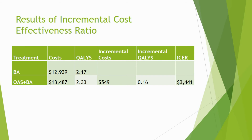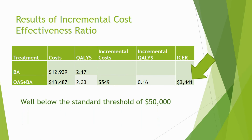The average cost for the BA population was slightly lower than the average cost for the OAS plus BA population. However, the QALYs for the OAS plus BA population were higher than the BA population. This resulted in an incremental cost-effectiveness ratio of $3,441, which is well below the standard threshold of $50,000 that is used in determining whether to implement a new technology.